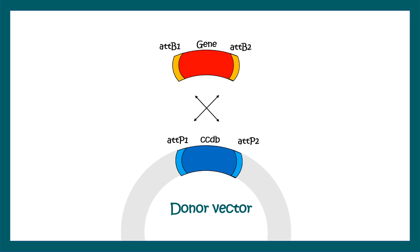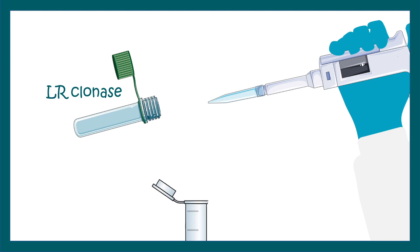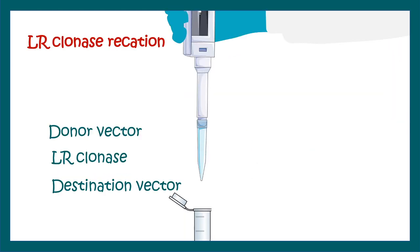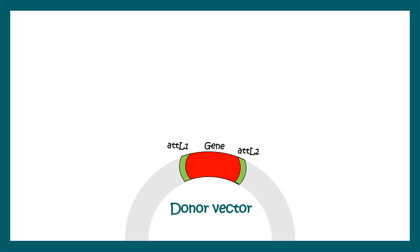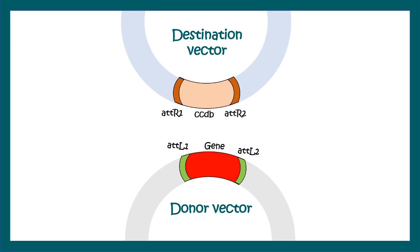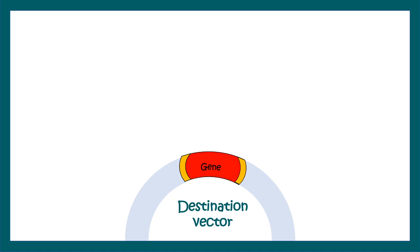Then we perform the LR clonase step where we add LR clonase, destination vector, and the donor vector. Now, the gene of interest is going to be transferred from the donor vector into the destination vector. Here is our donor vector with gene of interest flanked by ATT-L sites, and here is our destination vector with ATT-R sites. Again, these two sites can perform site-directed recombination, and that is how the destination vector would get the gene of interest.